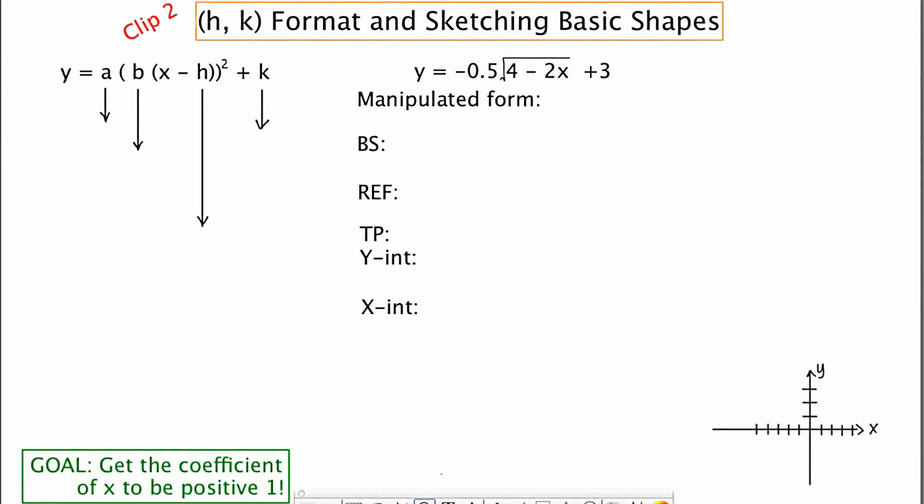In this next clip, I'm going to go over H-K format and some of the parameters of the variables A, B, H, and K. And then I'm going to provide an example of how to sketch a square root graph using this format.